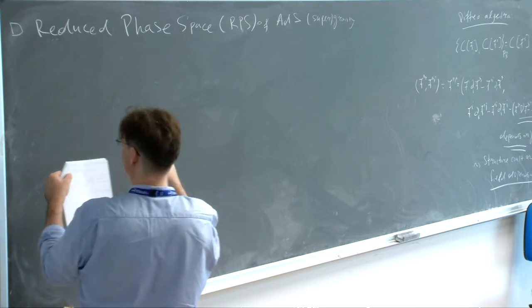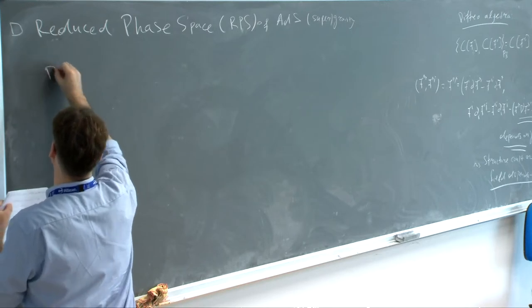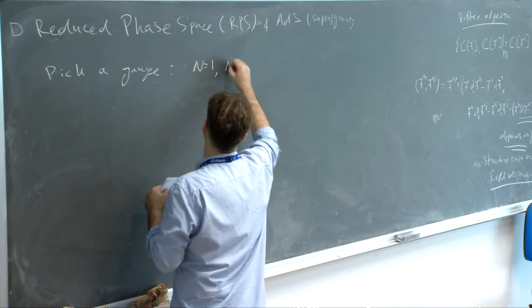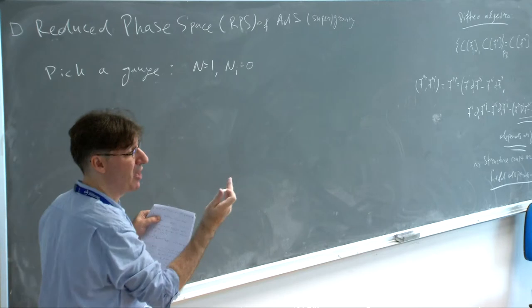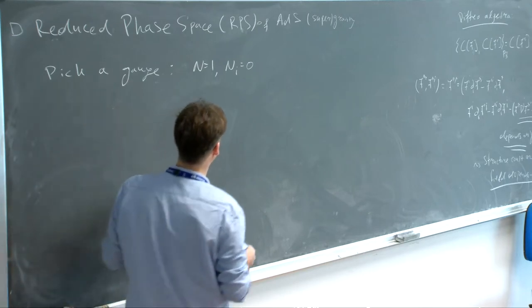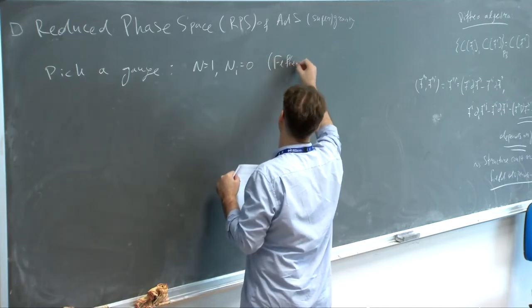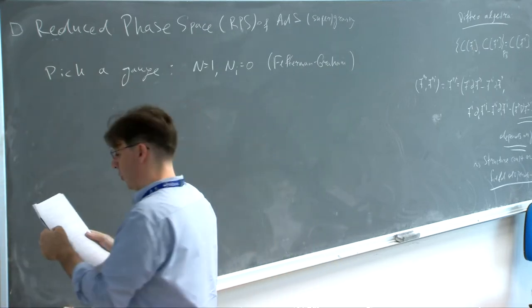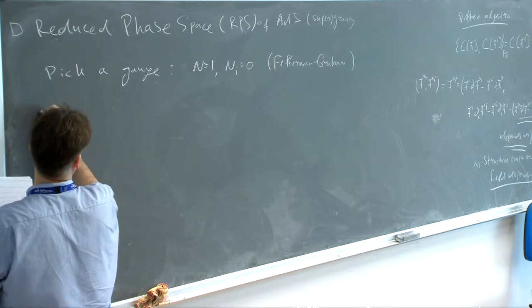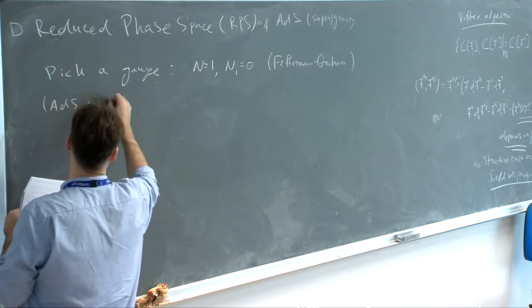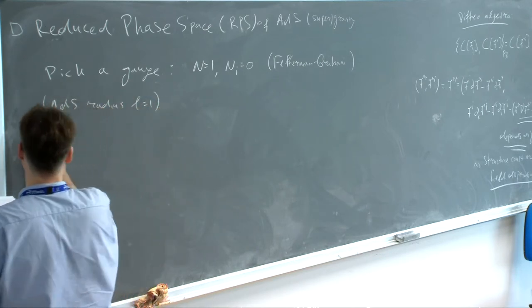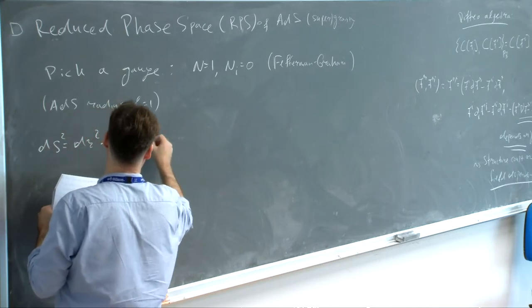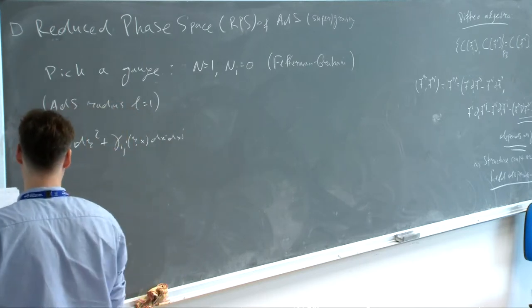I'm going to set n = 1 and n_i = 0. Remember, these are Lagrange multipliers — non-dynamical — so I can fix them as I want. This is called the Fefferman-Graham gauge. In this gauge, and setting the AdS radius to 1, we can write the metric in this form, where gamma_ij takes the following form: it's e^{2r} times [g0_ij + e^{-2r} g2_ij + ...]. This is the general structure — all coefficients here are independent of the radial coordinate. It's an asymptotic expansion in the radial coordinate.